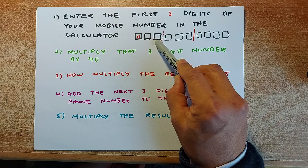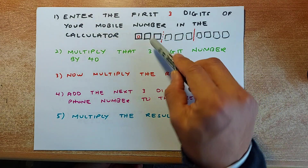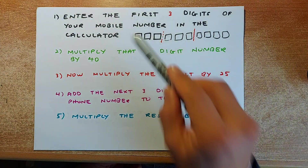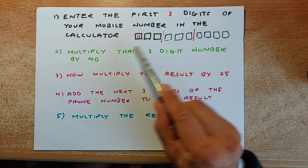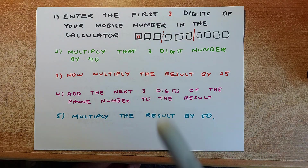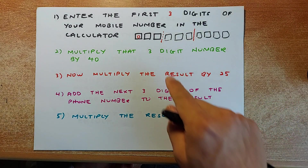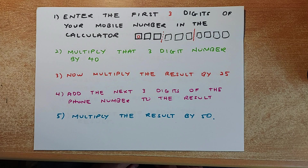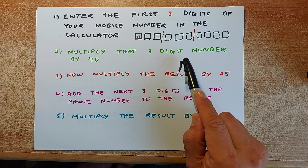Enter the first 3 digits of your mobile number in your calculator — it includes the 0, so it could be 021 or 022. Once you have done that, you are going to multiply that number by 40. Make sure you press the enter key, execute key, or equals key after each operation so you are calculating each step of the way. Different calculators have different functions, so multiply the first 3 digits by 40.